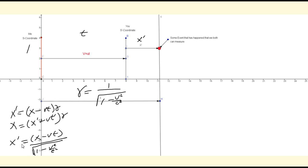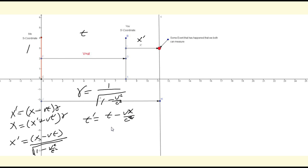To solve for T prime, plug gamma into the X equation and solve for T prime, using X minus V times T for your X. You end up with T prime equals T minus V times X over C squared, divided by the square root of 1 minus V squared over C squared.